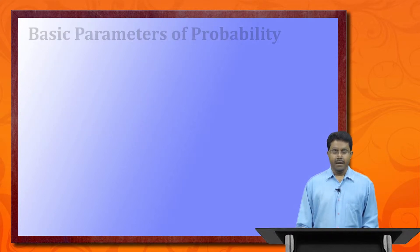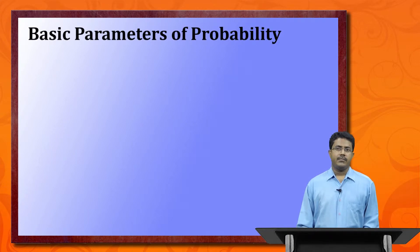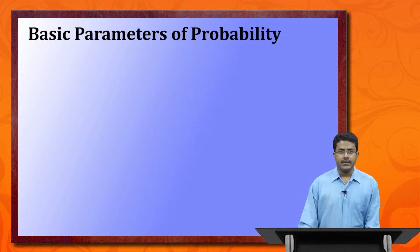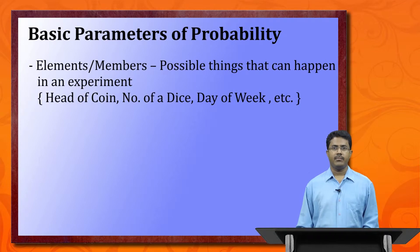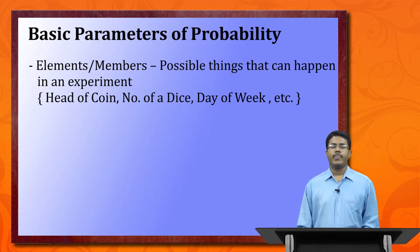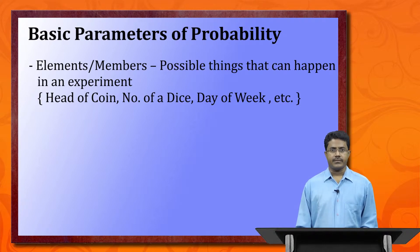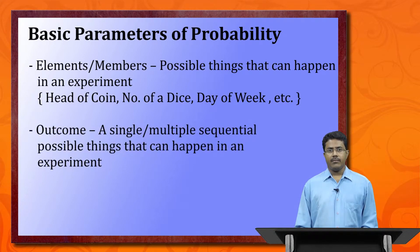Now we discuss the basic parameters of probability. Elements or members are the possible things that can happen in an experiment — like the head of a coin, a number on a die, or a day of the week. For example, rolling a die and trying to get the number six, or choosing Wednesday from the seven days of the week.